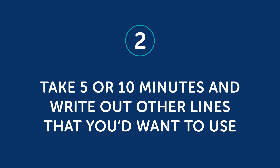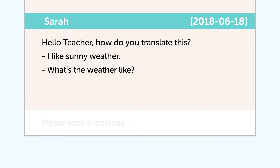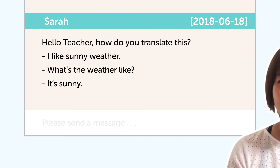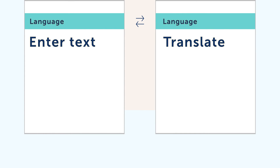Two, take five or ten minutes and write out other lines that you'd want to use, either in that conversation or questions that someone may ask you, and get them translated with the help of our Premium Plus teacher. Three, come up with your own topics that are interesting to you, then repeat step two — come up with all the phrases, questions, and answers that could come up in that conversation. Write them out and get them translated with your Premium Plus teacher, or translate them with translation software. It might not be perfect, but it could help you start speaking a little bit more of your target language.